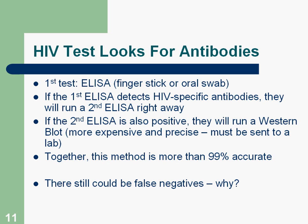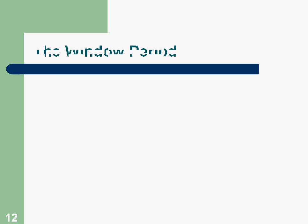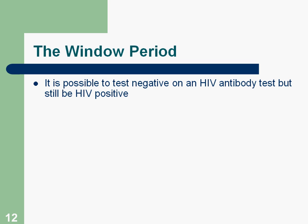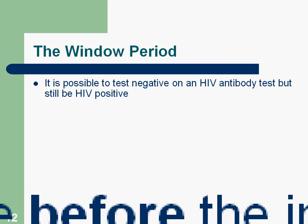There could still be false negatives. That means somebody takes an HIV test that looks for antibodies and it comes up negative, but it's a false negative because they actually are HIV positive — it's just that their body hasn't produced enough antibodies for the test to read. That could happen if somebody was infected, say, two weeks ago and their immune response hasn't kicked in thoroughly enough for the test to find the antibodies. This is what's known as the window period — it is possible to test negative on an antibody test but still be HIV positive.